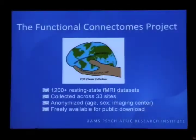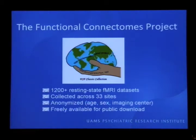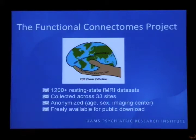This is really where we want to be going with the field — looking at functional networks, and not only the structural connections but also the functional connections composing the brain. I have to give a lot of credit to the functional connectome project, which currently boasts over 12,000 resting state fMRI datasets — that's 1,200 individuals engaging in a resting state scan in which they passively look at a cross or have their eyes closed, collected across 33 sites in the world.